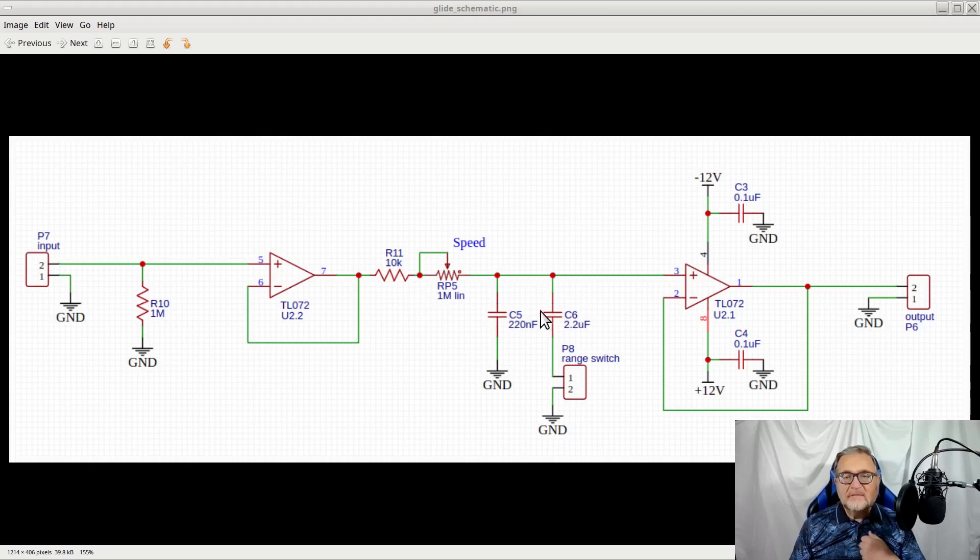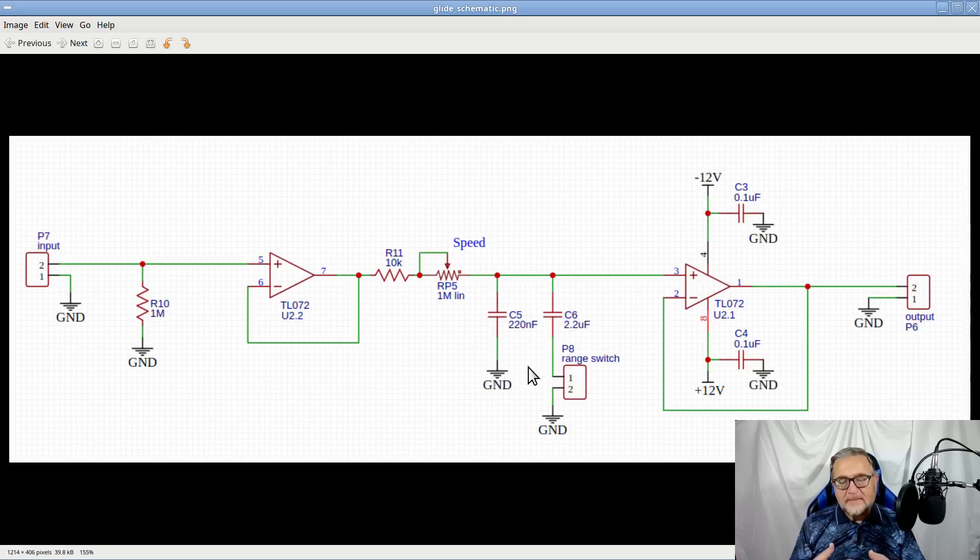Vice versa, whenever C5 and C6 are at a voltage higher than the input signal, they will start discharging over the output of U2.2, which is at a very low impedance. And therefore, the value of the capacitors will decrease from the current value to the new value of the input, and so will the output of the glide circuit.